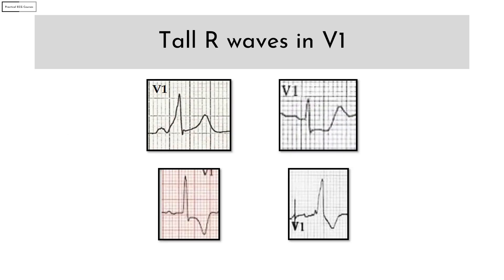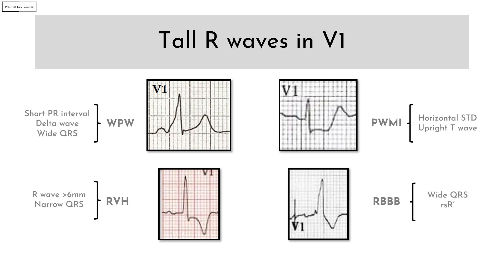Normally there is a gradual progression in the height of the R wave from V1 to V6, meaning V1 has the smallest R wave, so tall R waves in V1 are abnormal. The four important DDs are WPW, posterior MI, RVH, and RBBB. If there is a short PR interval, delta wave, and wide QRS, consider WPW. If there is horizontal ST segment depression with an upright T wave, consider posterior MI. If the R wave height is more than 6 millimeters and the QRS is narrow, consider RVH. If the QRS is wide with an RSR prime pattern, consider RBBB.